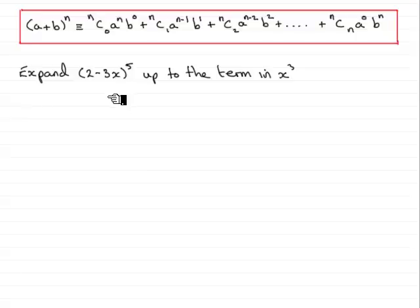In this tutorial, we've been asked to expand (2-3x)^5 up to the term in x cubed. I'm going to use the binomial expansion formula that I showed you in my first tutorial. But the point about this particular tutorial is I want to show you how to handle one that has a negative term here.